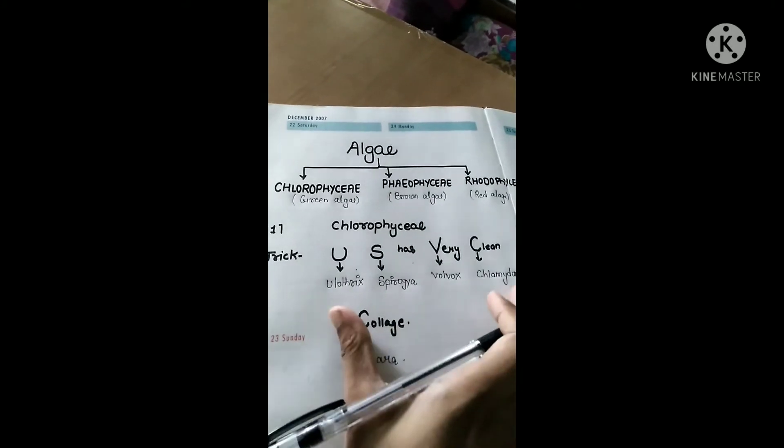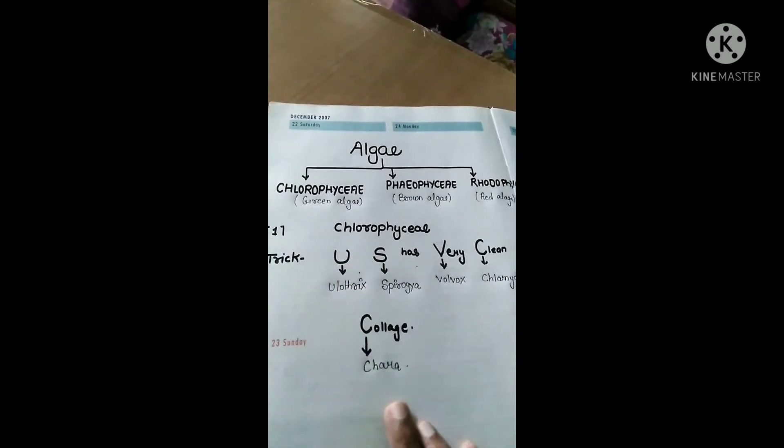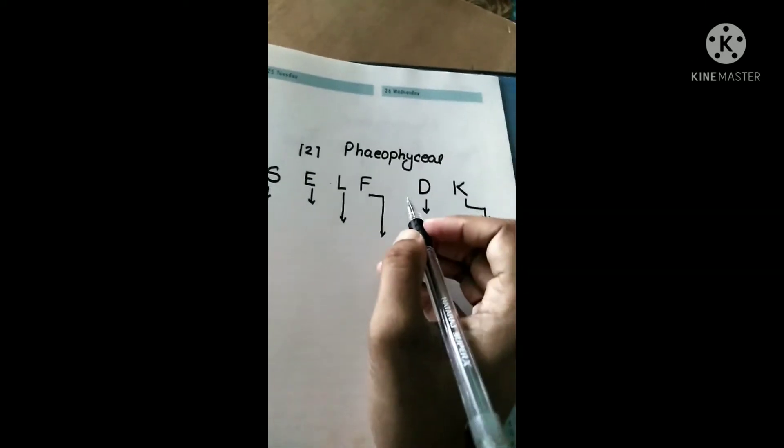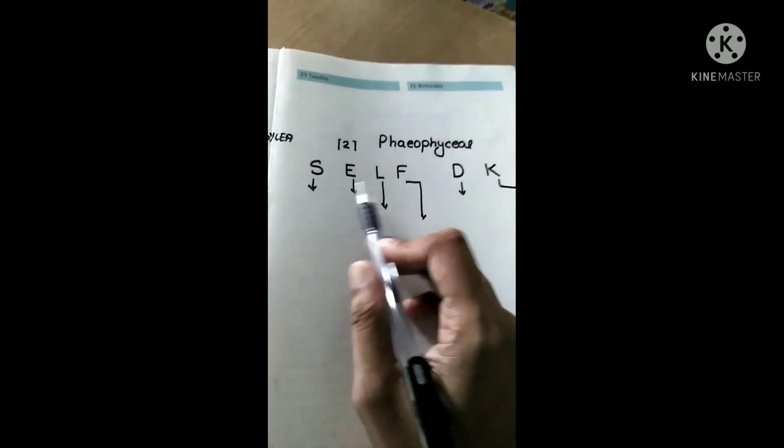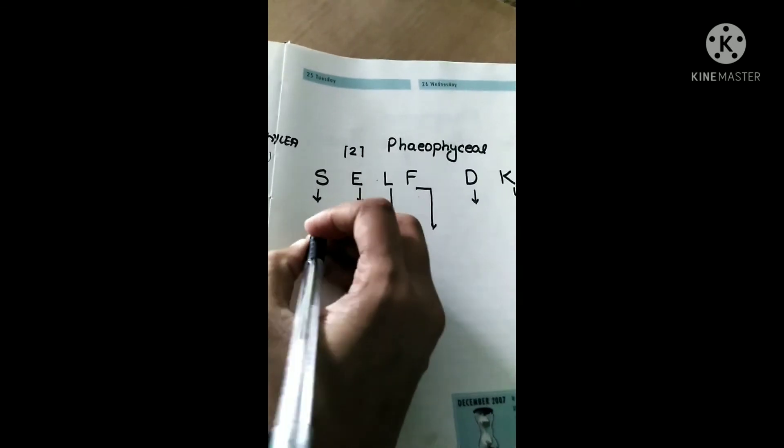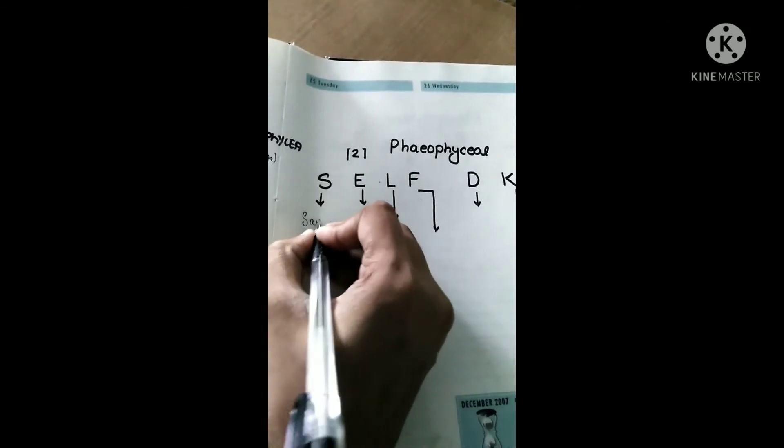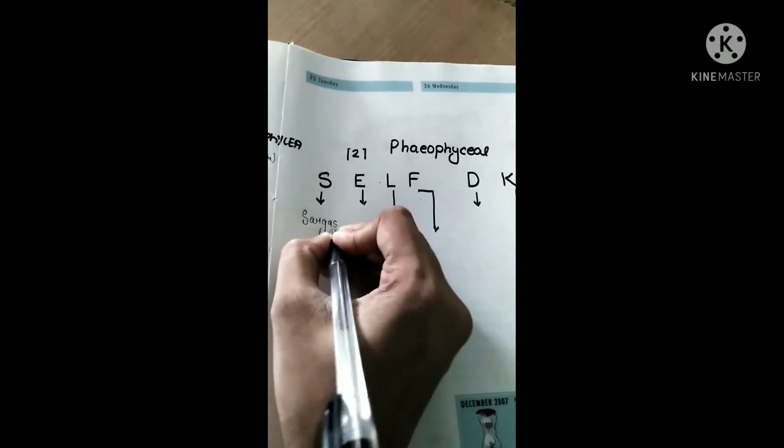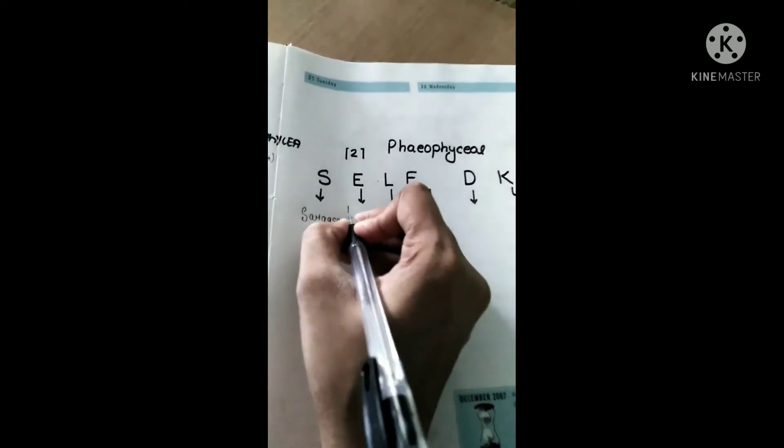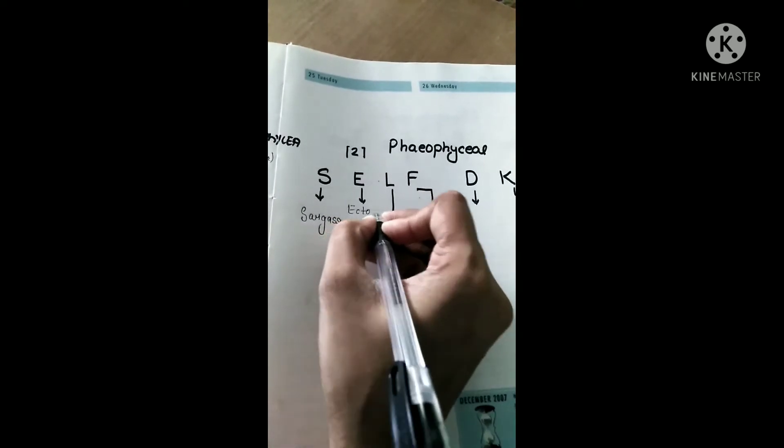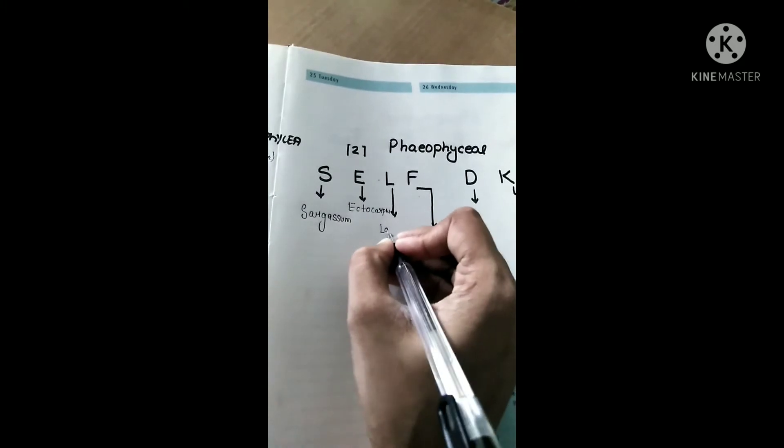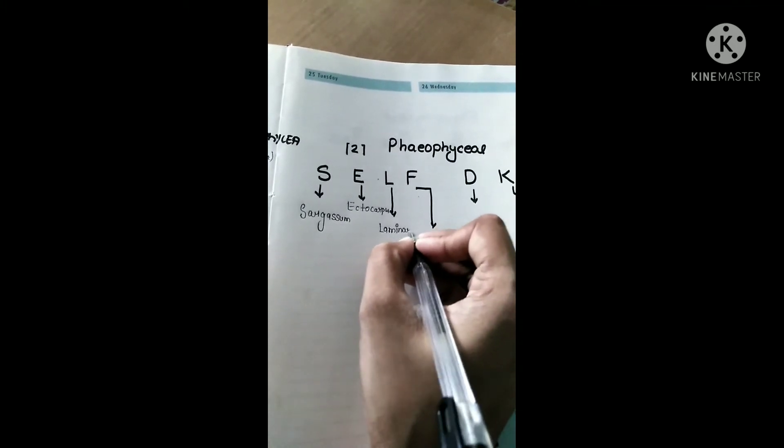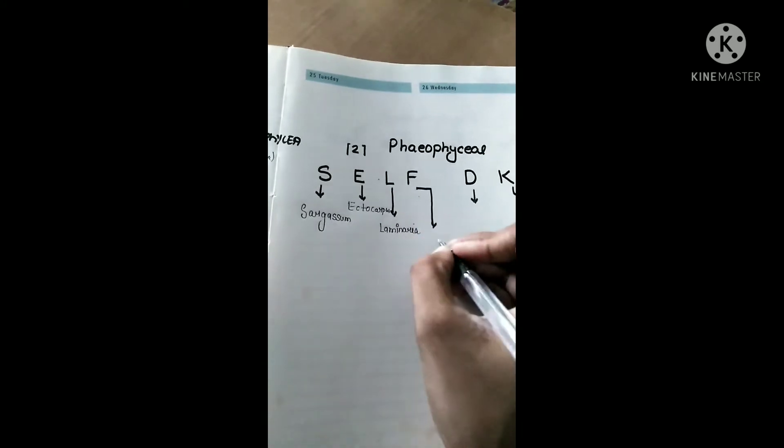Now come to the brown algae, Phaeophyceae. The trick is Self Decay. S for Sargassum, E for Ectocarpus, L for Laminaria, F for Fucus, D for Dictyota, and K for Kelp. That is the trick of Phaeophyceae, which is brown algae.